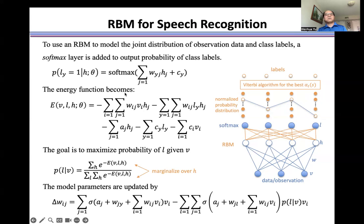The energy function becomes this formulation. The goal is to maximize the probability of l given v in this formulation. Here we marginalize over h. The model parameters are updated by using this formulation.